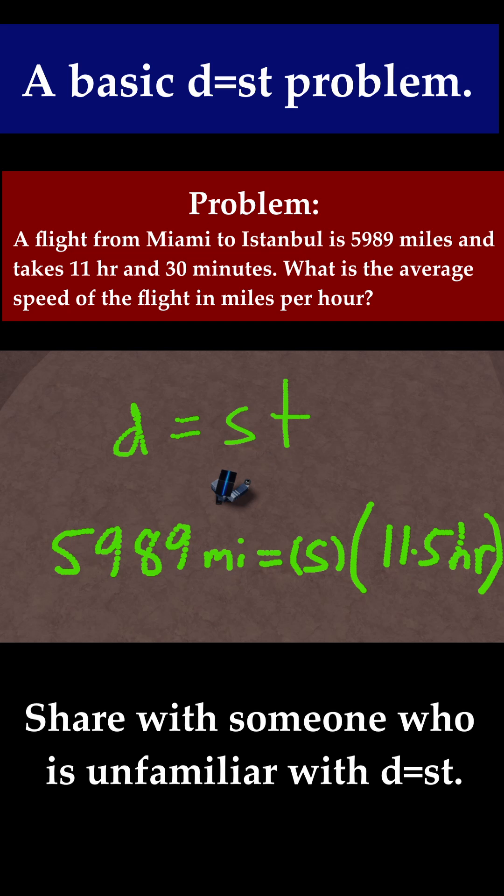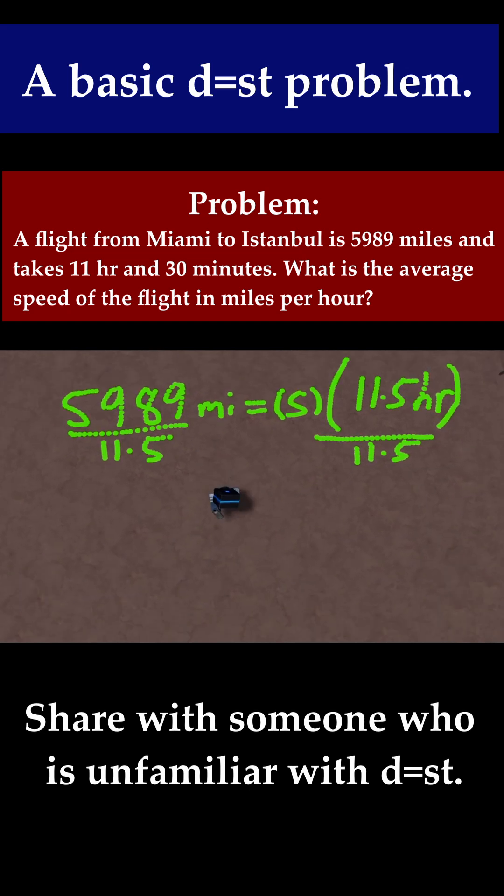And then now, just to solve for the speed, just divide by 11.5 on both sides. And then you just add the units back in.